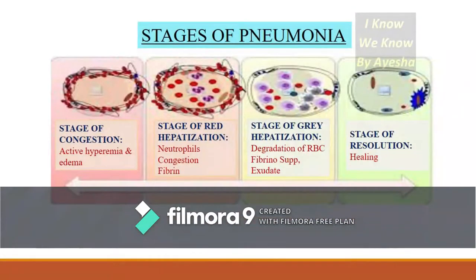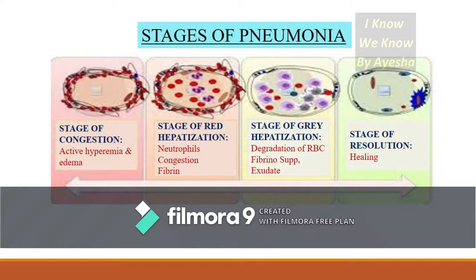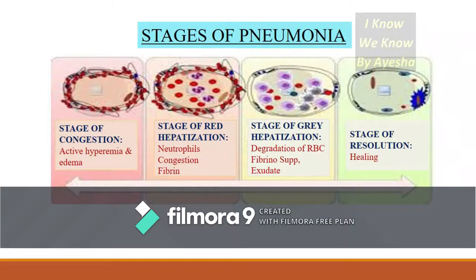Pneumonia does not occur directly; it follows stages. The first is the stage of consolidation, where there will be active hyperemia and edema in the lung. The second stage is red hepatization, where neutrophils, congestion, and fibrin tissue form in the lung. This is followed by gray hepatization, where degradation of red blood cells, fibrin accumulation, and more exudate can be seen. The last stage is resolution, where treatment leads to healing of the lung.